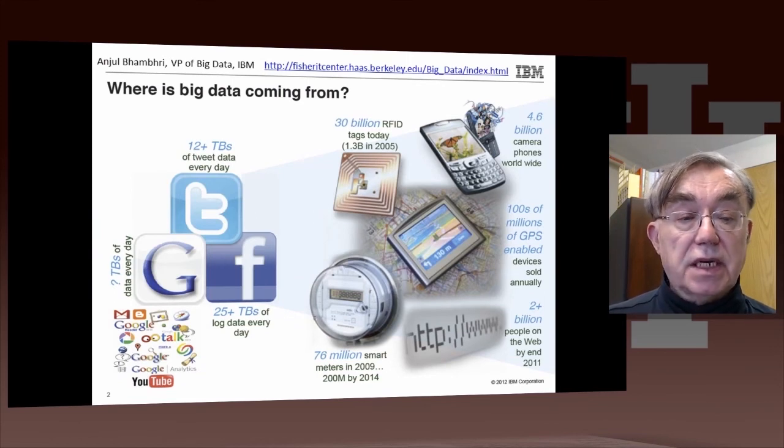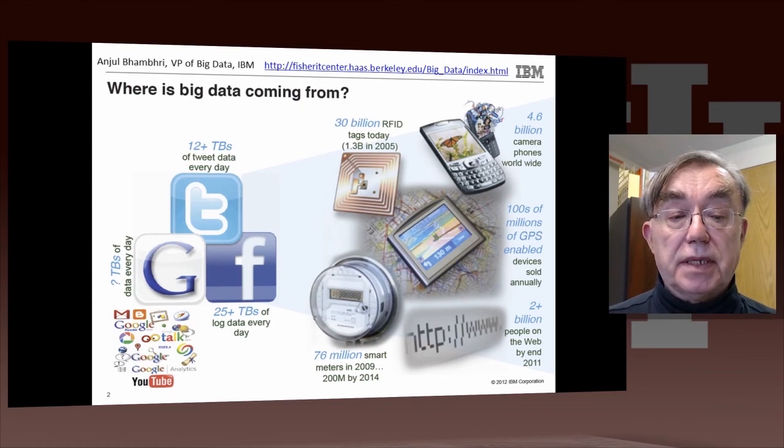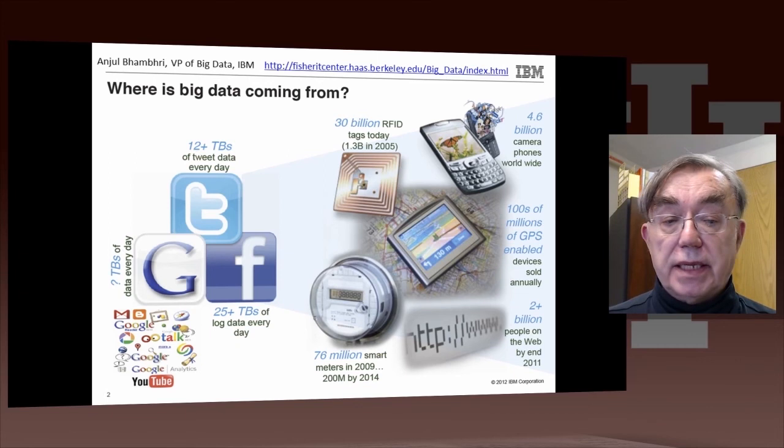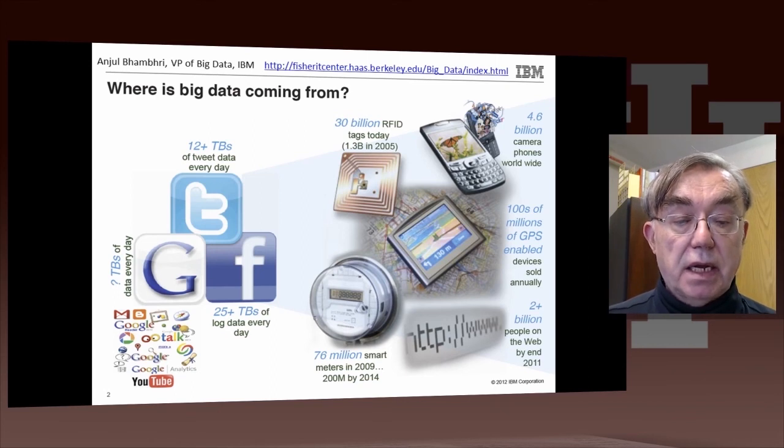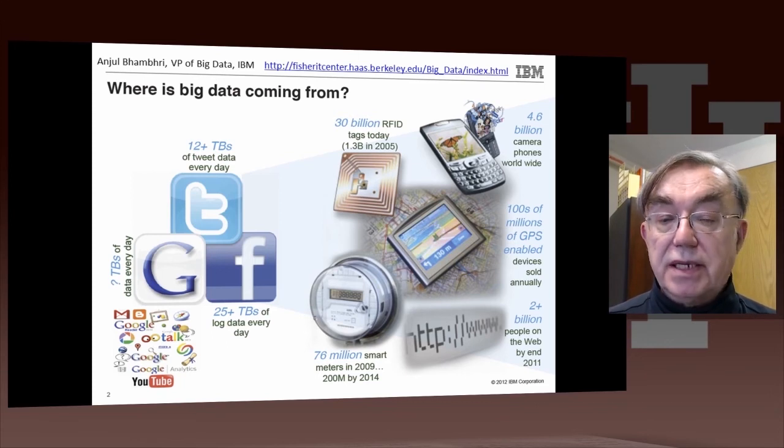So this is actually from the IBM talk from the Berkeley Big Data Conference. It discusses where the data's coming from. We have on the left, the basic Internet, 12 terabytes of tweet data every day, 25 terabytes of Facebook log data. And it doesn't actually know how much data Google has.